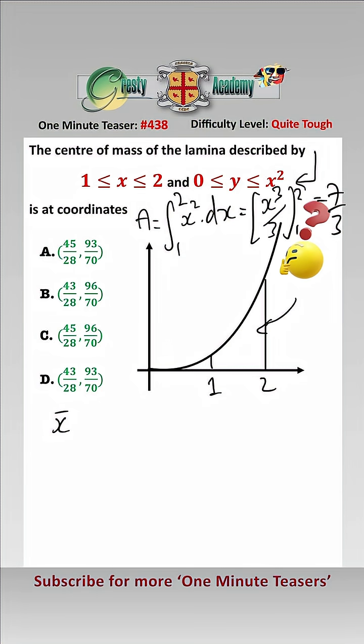Now x bar, let's draw a little strip here like this which will be height y and width dx and the x coordinate will be x here. So we need to take the average so that will be x bar is 1 over a the integral between 1 and 2 of x times by y which is x squared dx.